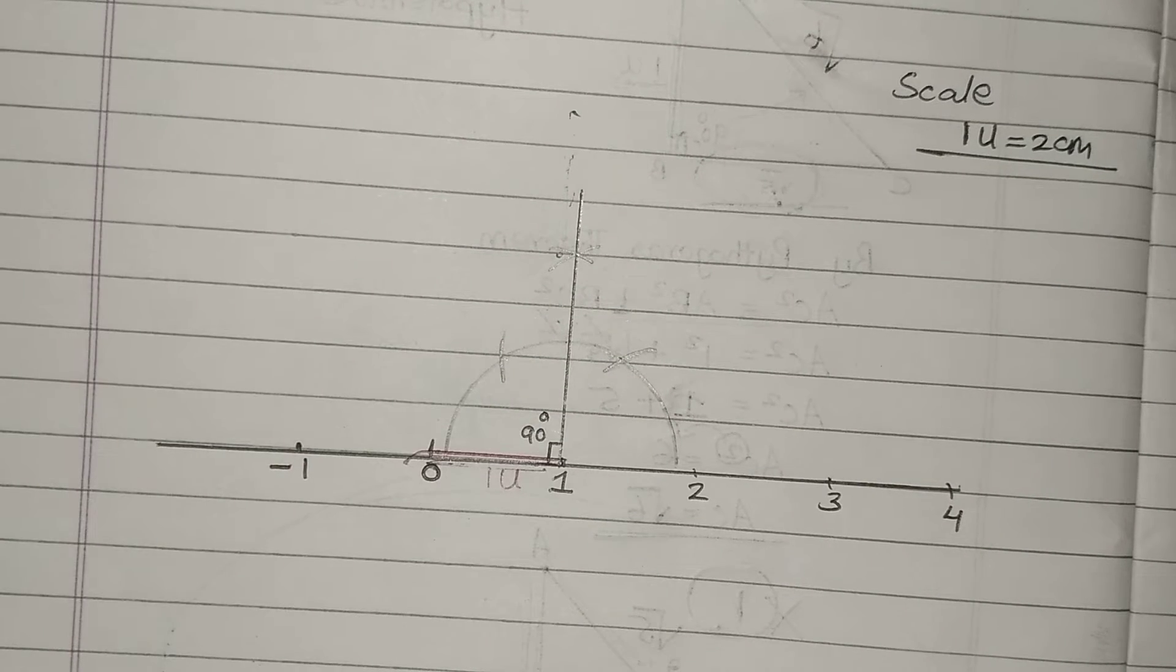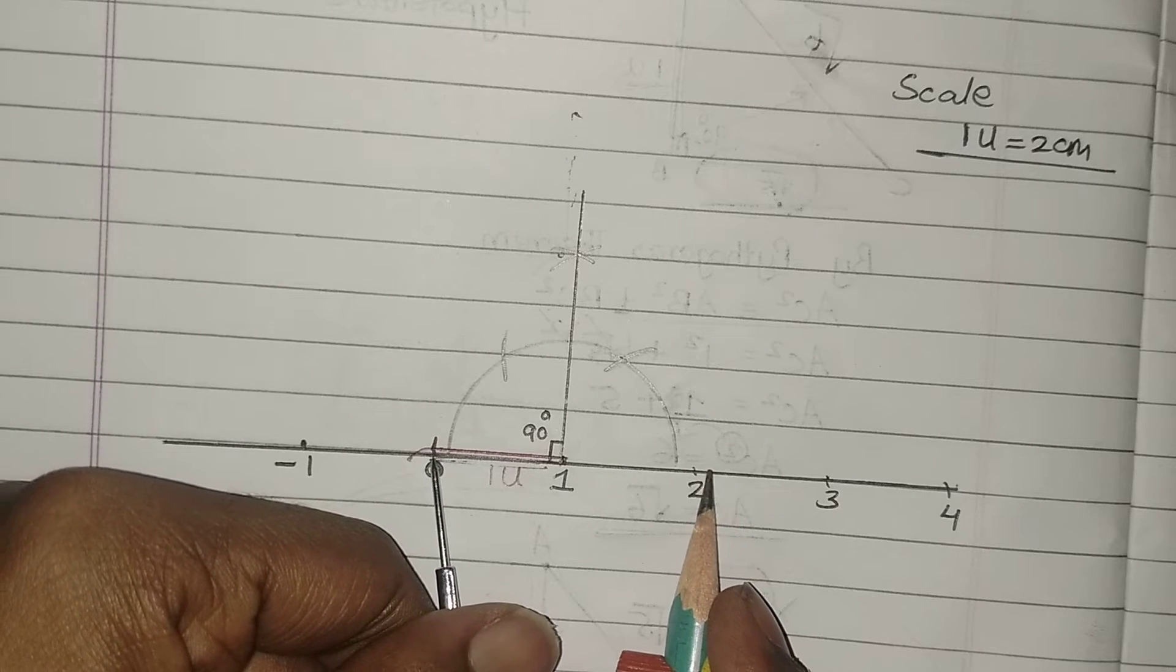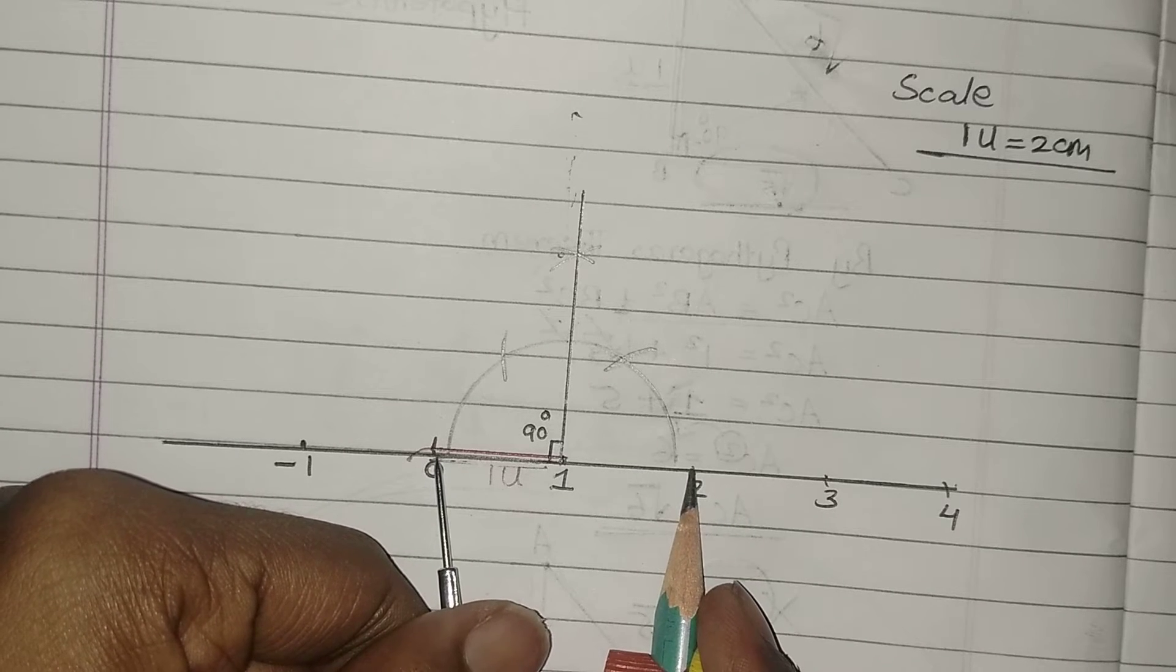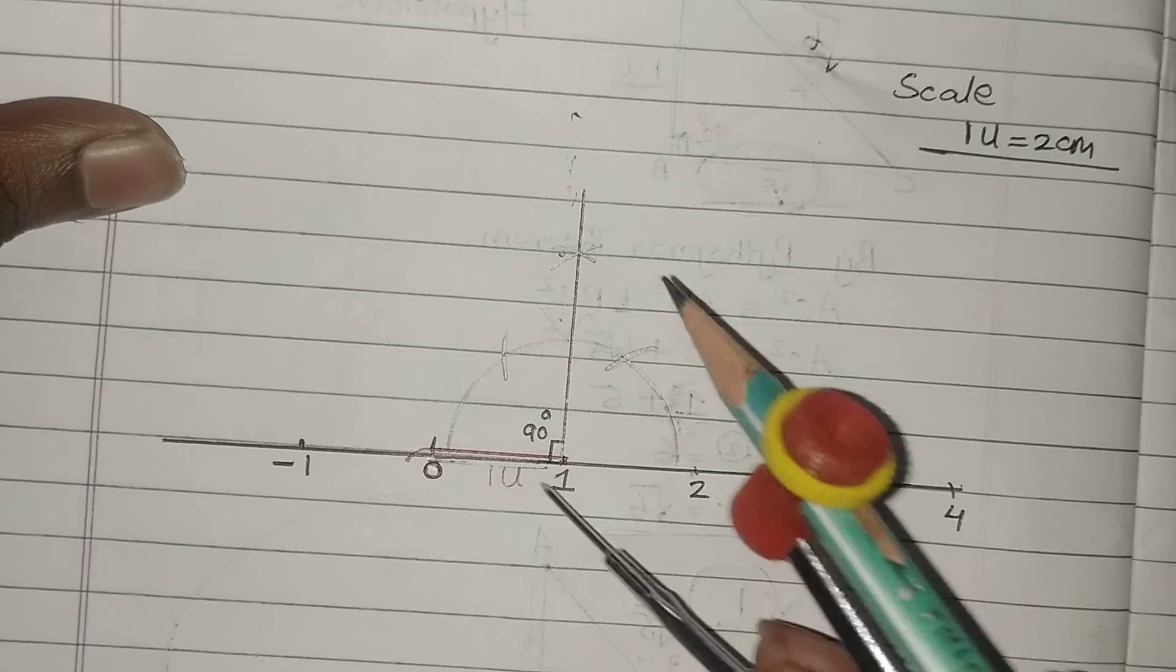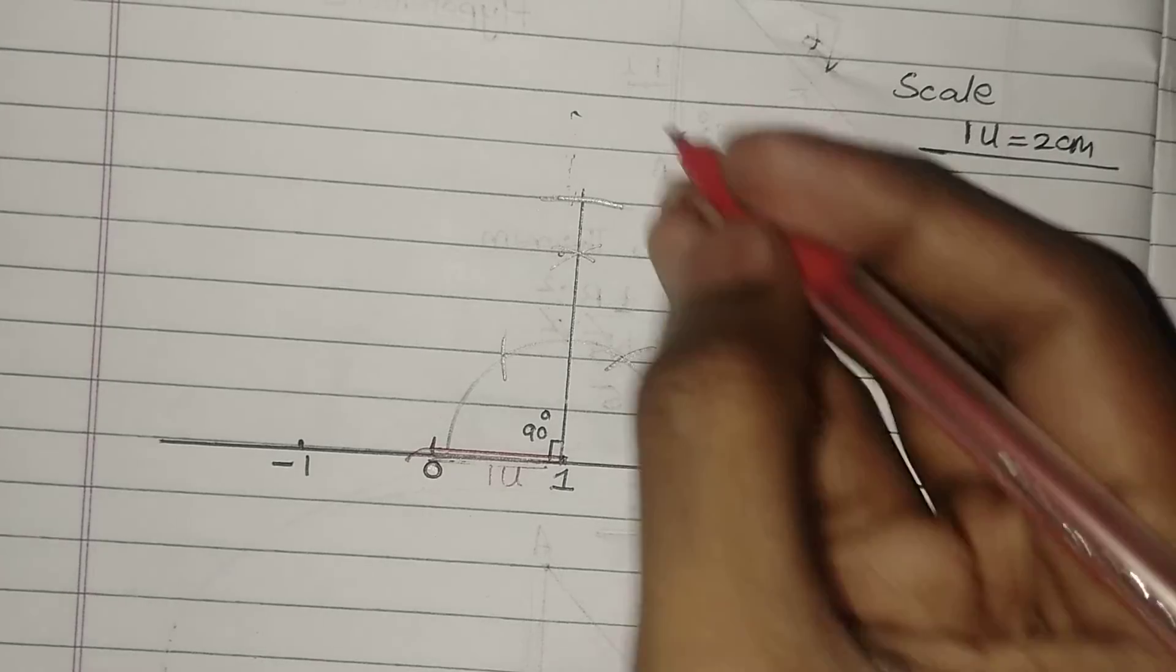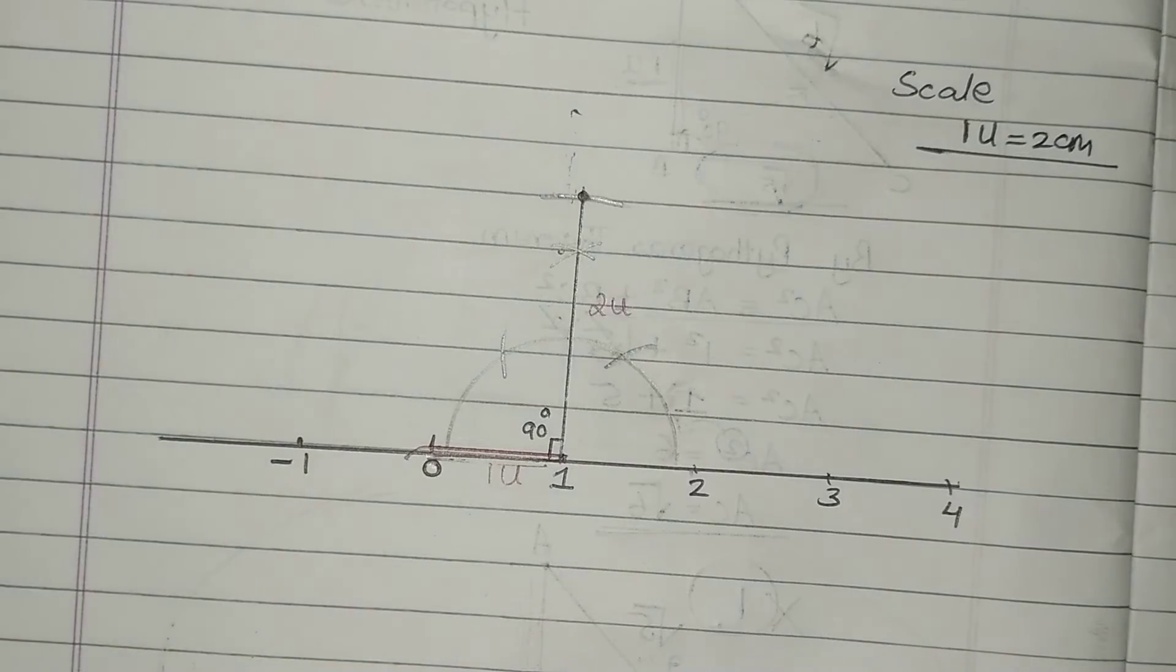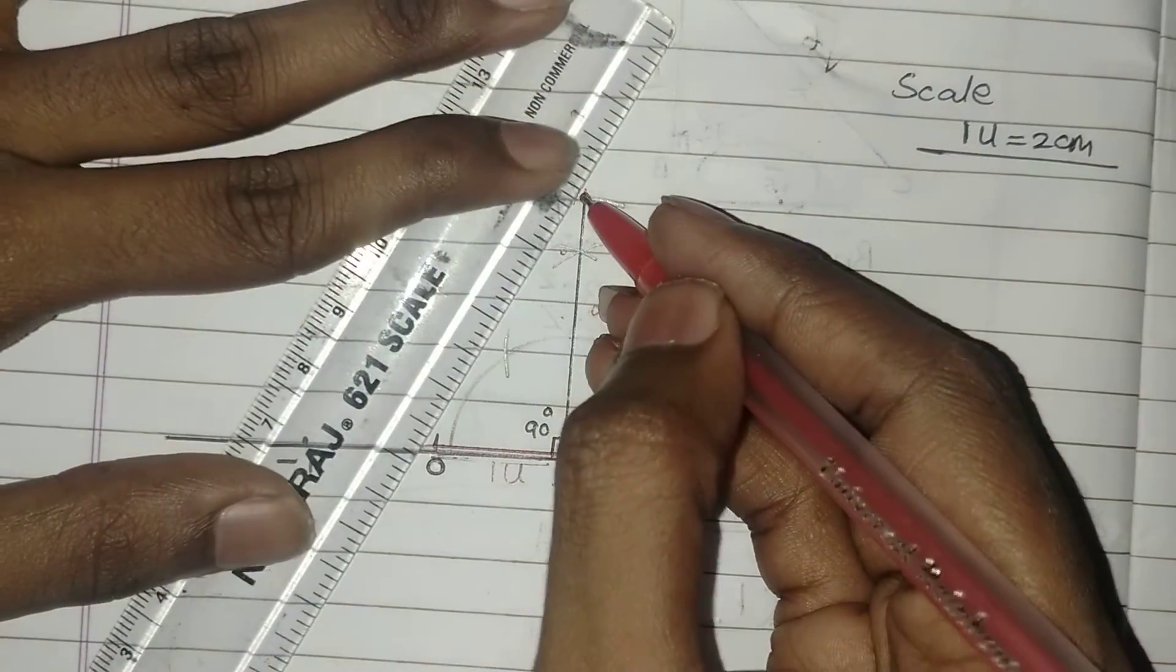From 90 degrees, I have to take 2 units. Remember, 2 units means this is my 2 units. Don't take 2 centimeters and lose your marks. Your teacher definitely won't give the mark, even though we beg. So please be aware of those things. This is my 2 units. After that, join that.